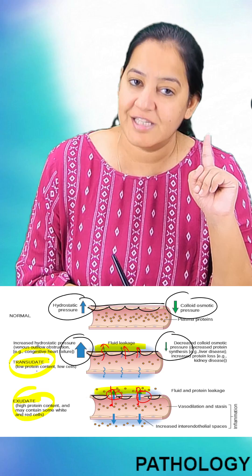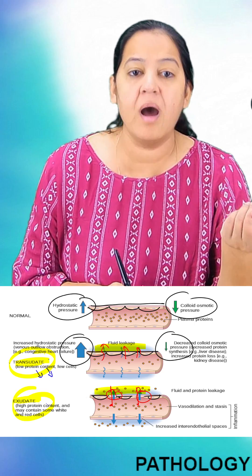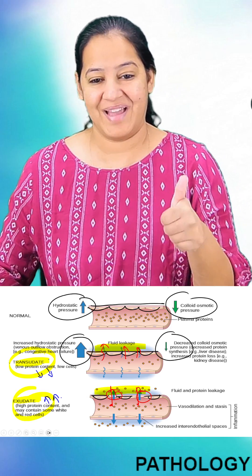So in transudate, it is protein-poor, cell-poor edema. Exudate is protein-rich, cell-rich edema. Thank you.